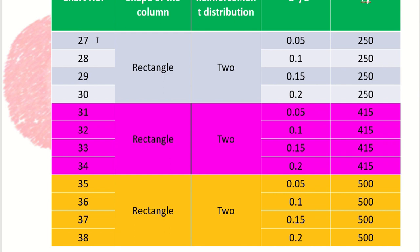In this table you can see which chart number contains which data. Chart number 27 is for a rectangular column where reinforcement is distributed equally on two sides, with d'/D = 0.05 and fy = 250. For chart numbers 27 to 38, they are for rectangular columns with distribution on two sides, covering different fy values — 250, 415, and 500 — and four different d'/D values: 0.05, 0.1, 0.15, and 0.2. So for all these combinations, we have different graphs.